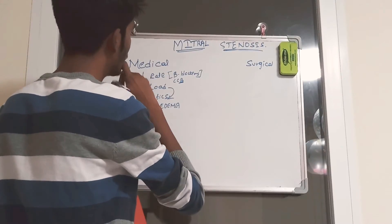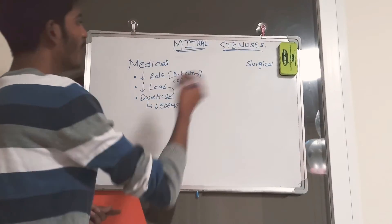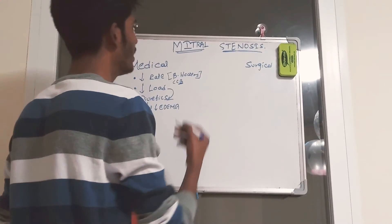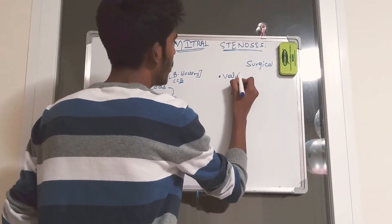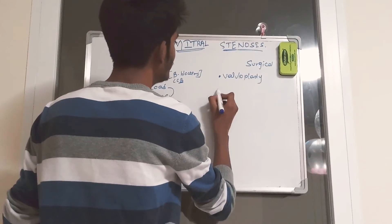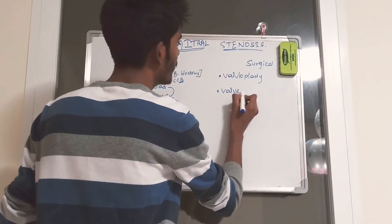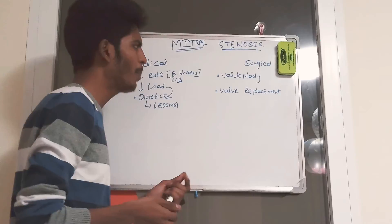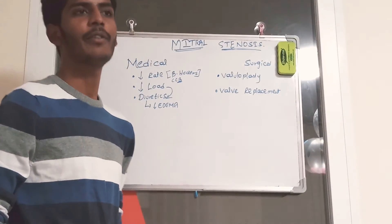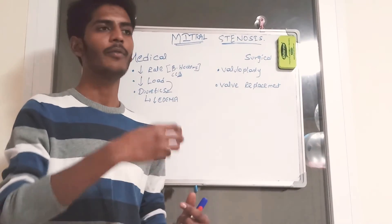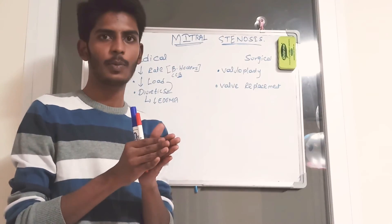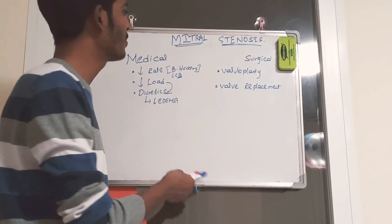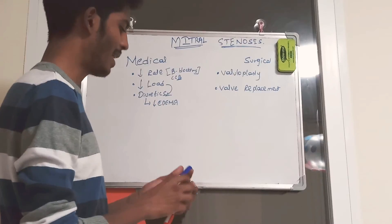Load can also be controlled by diuretics, and rate can also be controlled by calcium channel blockers. Since medical management does not resolve the exact etiology, surgical treatment is necessary. Surgical options include valvuloplasty and valve replacement. In balloon valvuloplasty, a percutaneous intervention is performed through large vessels to reach the mitral valve, where a balloon is dilated to divide the fibrotic and calcified attachments of the cusps, allowing free flow.